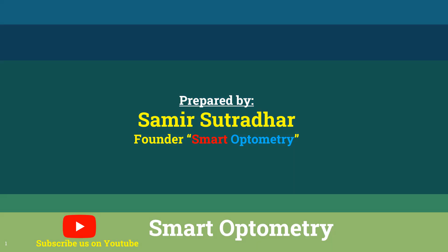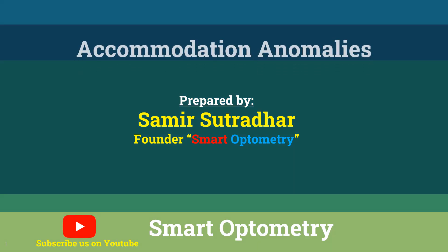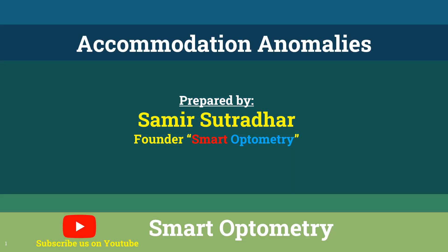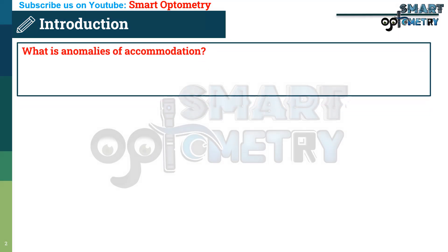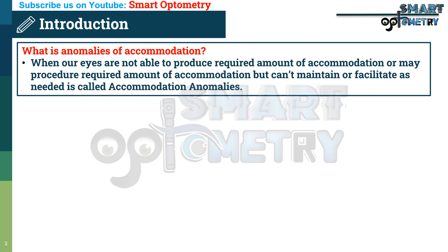In this video, I will discuss about accommodative anomalies. When our eyes are not able to produce the required amount of accommodation, or may produce the required amount but cannot maintain or facilitate it as needed, that is called accommodative anomalies.